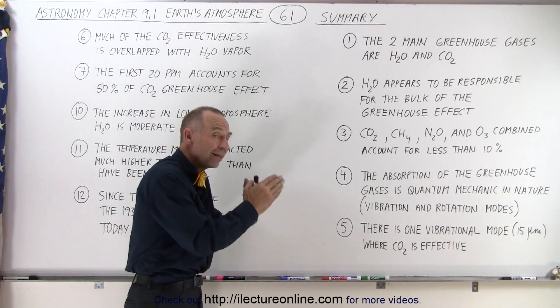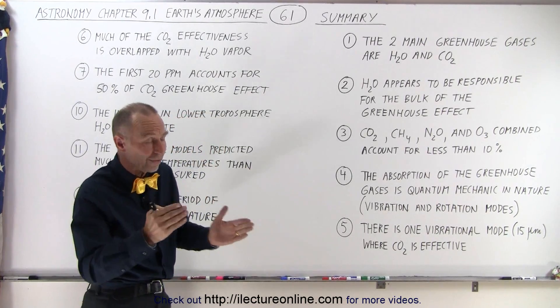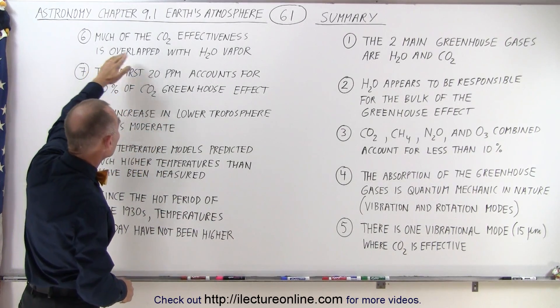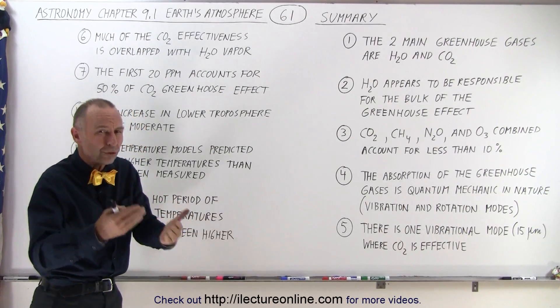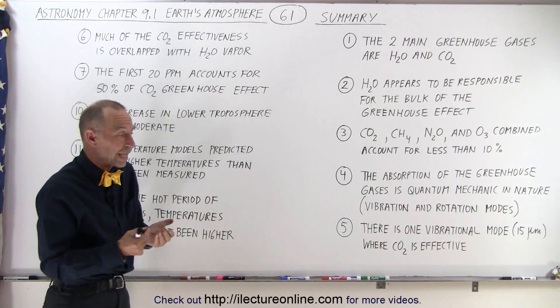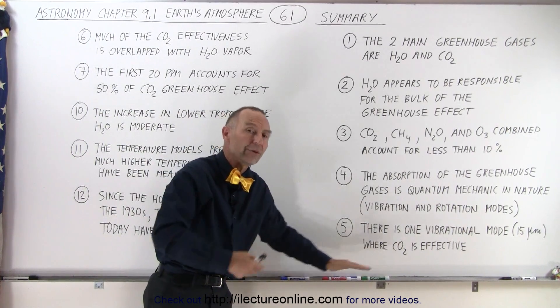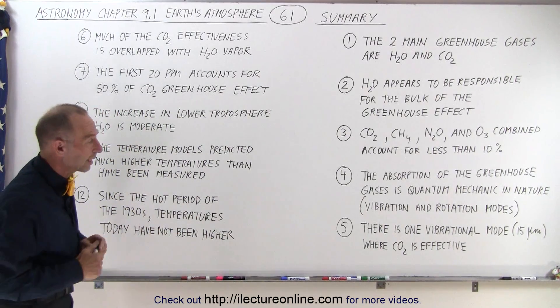And it turns out that that particular band, that ranges roughly from about 13 to about 17 micrometers, is overlapped with water vapor. So water vapor already takes care of about two-thirds of that radiation, absorbs that radiation, so that therefore carbon dioxide can only absorb about the remaining one-third that water vapor doesn't already absorb. They kind of share that activity.